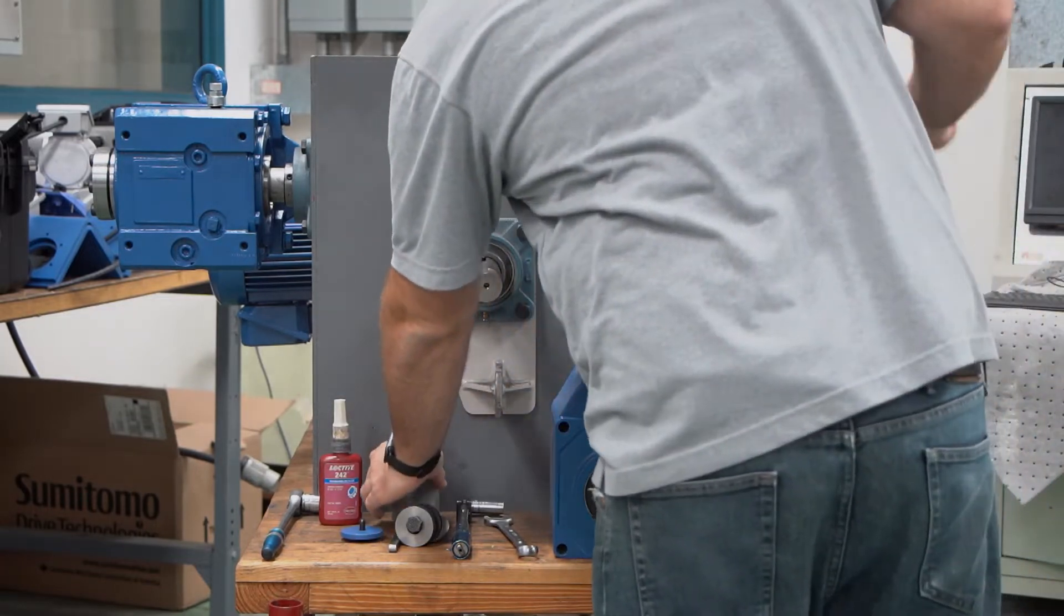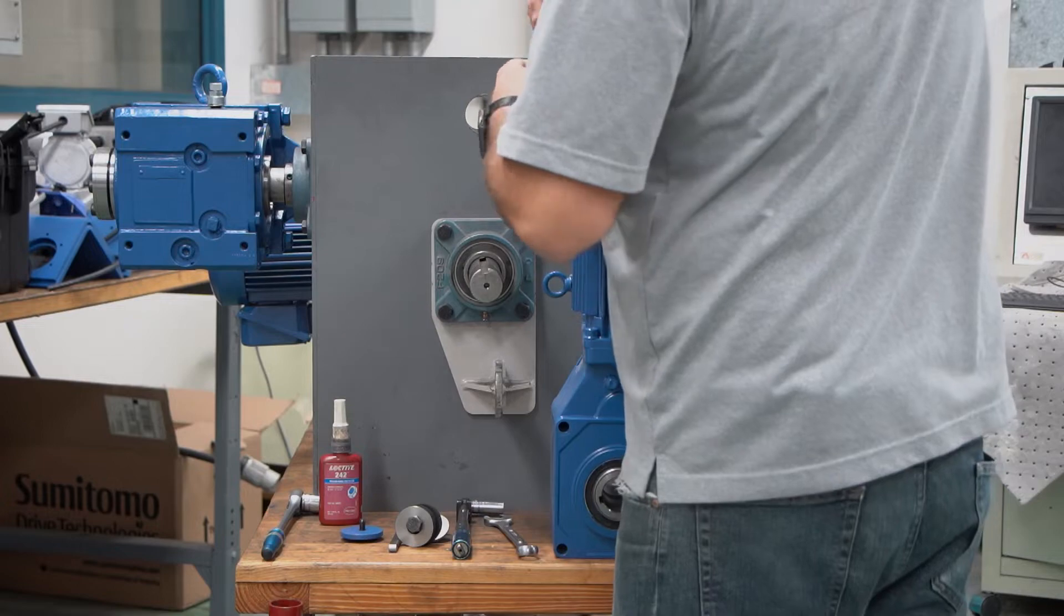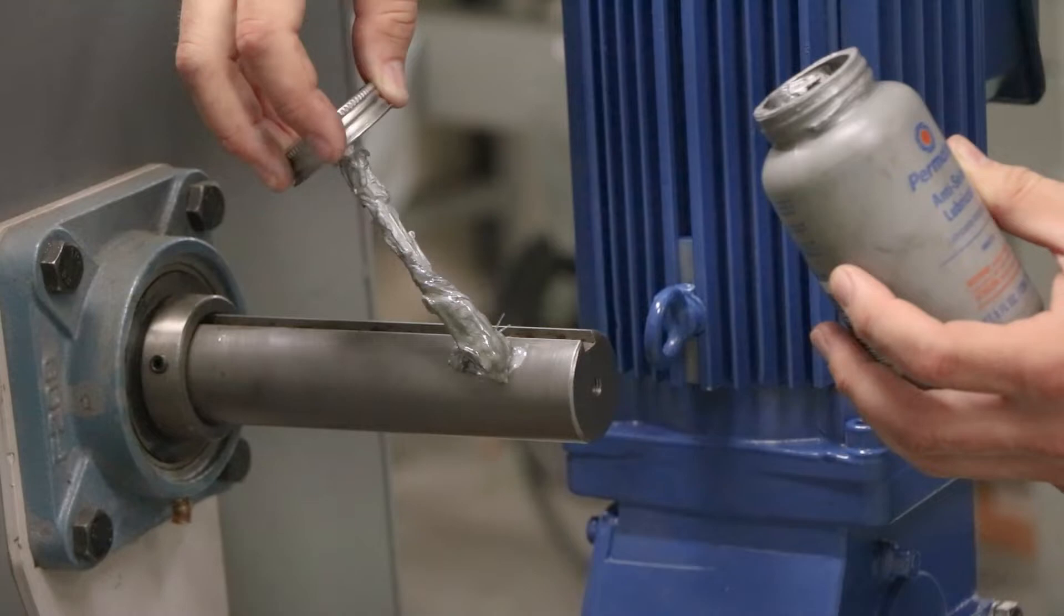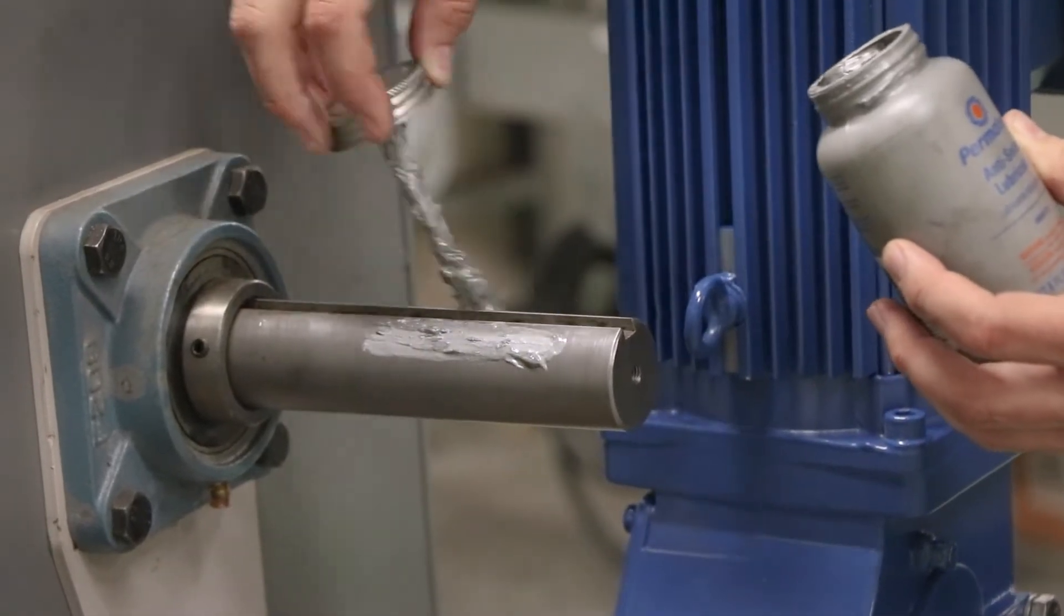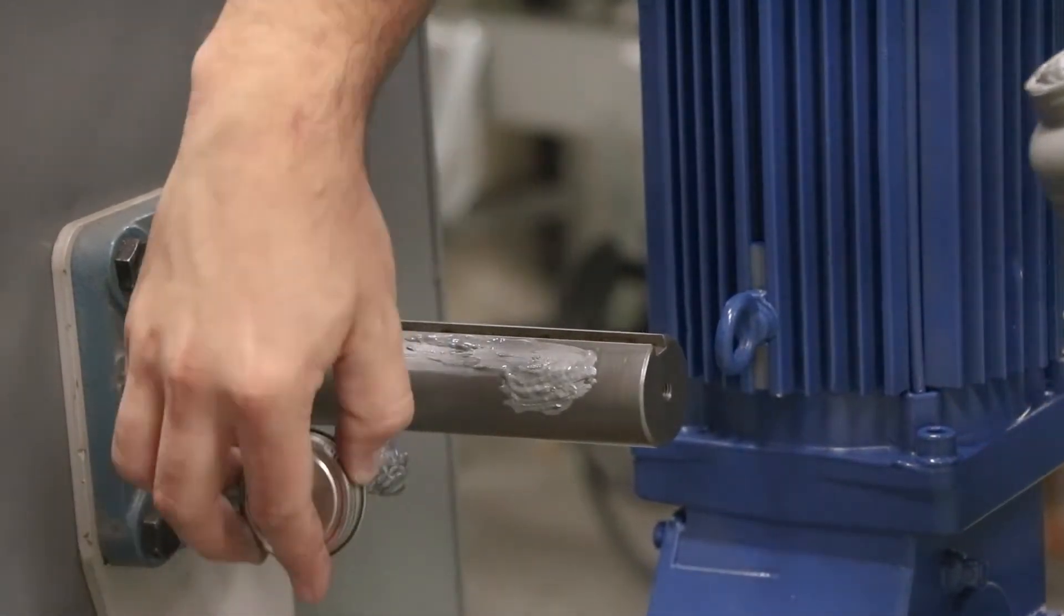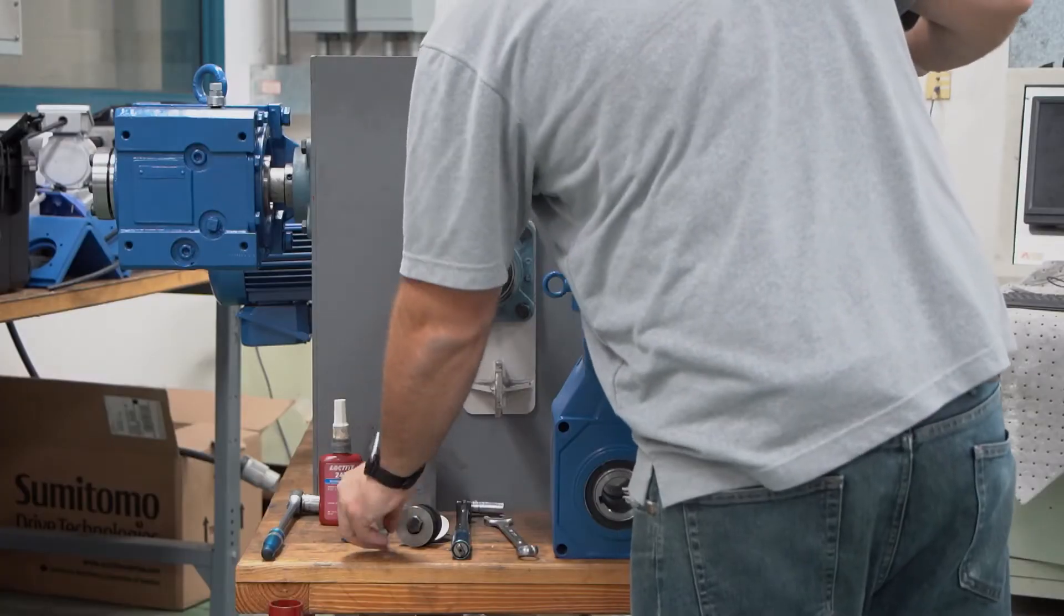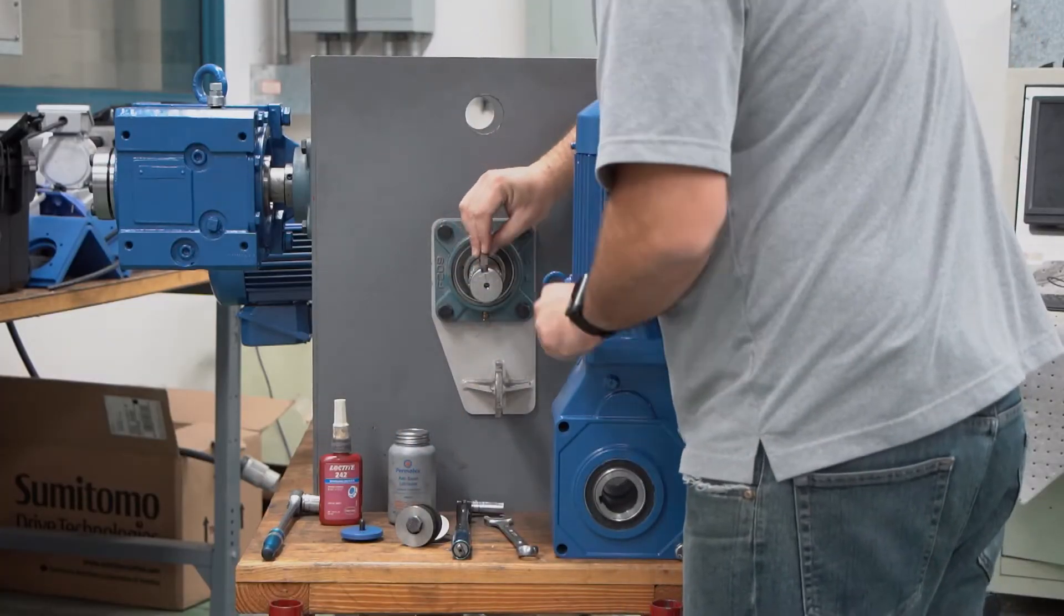Next up we're going to take that anti-seize and we're going to coat the driven shaft. Now the reason for this is to prevent any fretting corrosion between the shaft and the bore of the unit. Long term, fretting corrosion could become an issue and make the reducer hard to remove, so we want to prevent that by using the anti-seize.